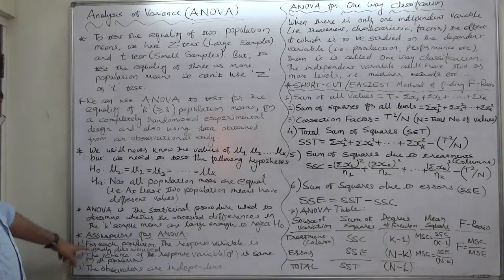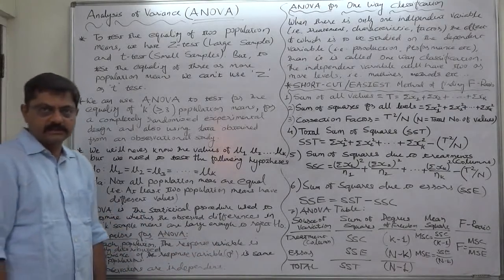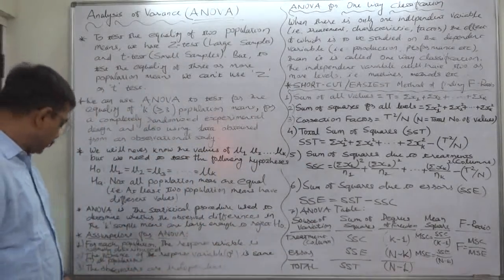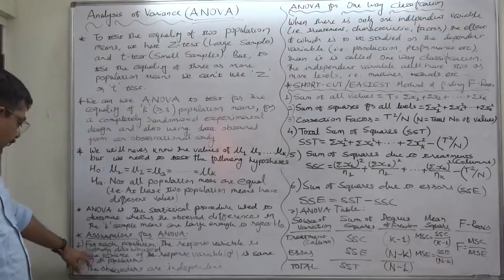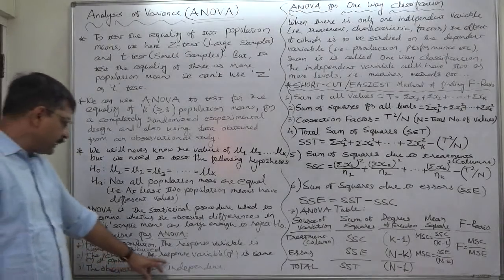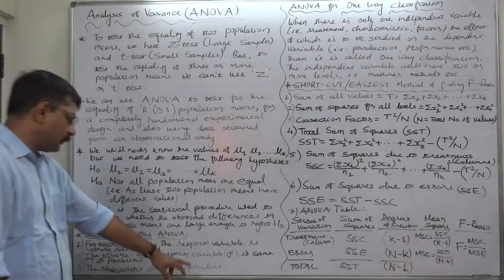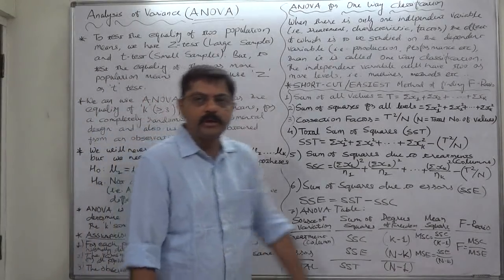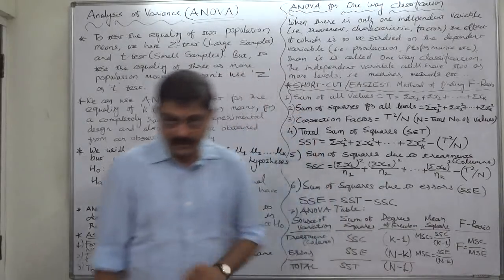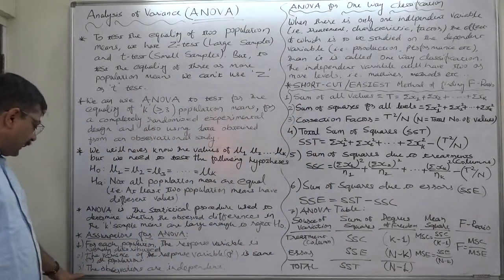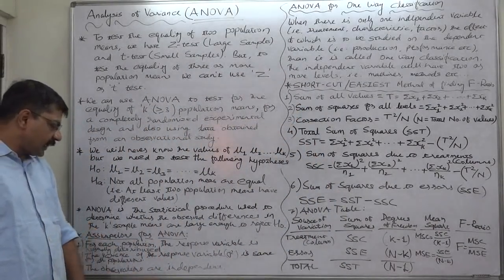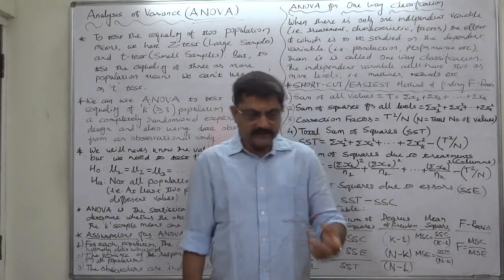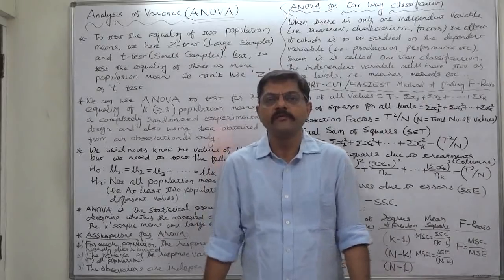We can use ANOVA under some important assumptions. The first is: for each population, the response variable is normally distributed. Number two: the variance of the response variable, sigma squared, is the same for all populations — all populations have the same variance. Number three: the observations are independent — all sample units are independent of each other.